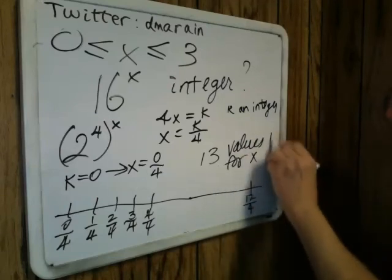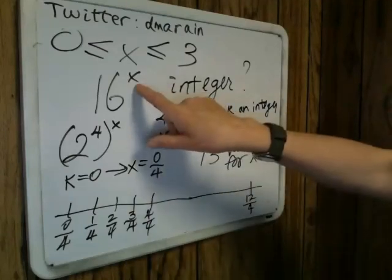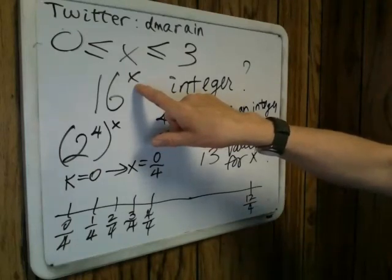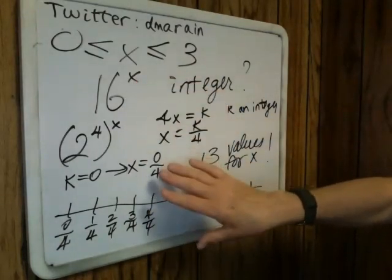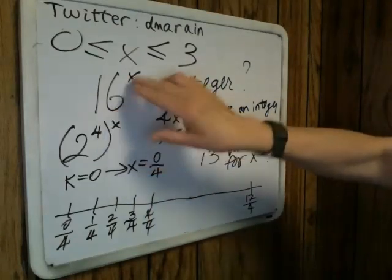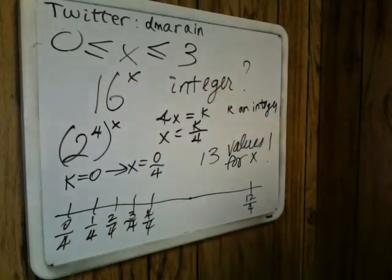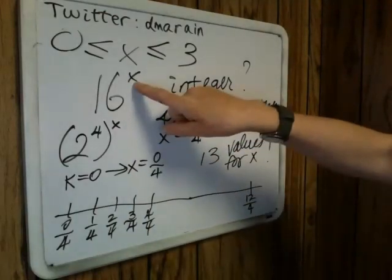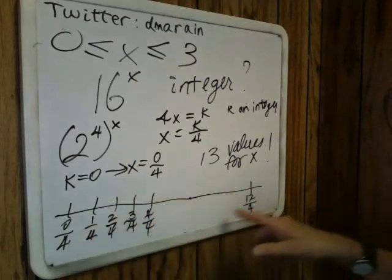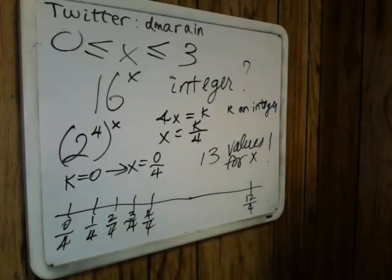Are these the only values possible for x? It did not specify that x is an integer. On the SAT, it's understood that all variables represent real numbers — in this case x turned out to be rational. But could it be irrational? Could you raise 16 to the square root of 2 or pi and come out with an integer value? On an SAT you wouldn't be thinking like that, but for enrichment it's worth a discussion. As it turns out, x comes from the set of rational numbers of the form k/4, where k runs from 0 to 12, and there are 13 values for x.